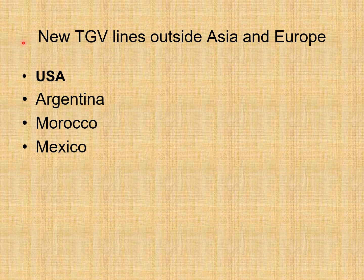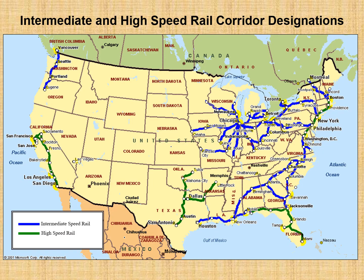New high-speed rail lines outside Asia and Europe are found in the USA, Argentina, Morocco, and Mexico. A map of the United States shows blue lines representing intermediate-speed rail corridors and green lines representing high-speed rail corridors across the country.